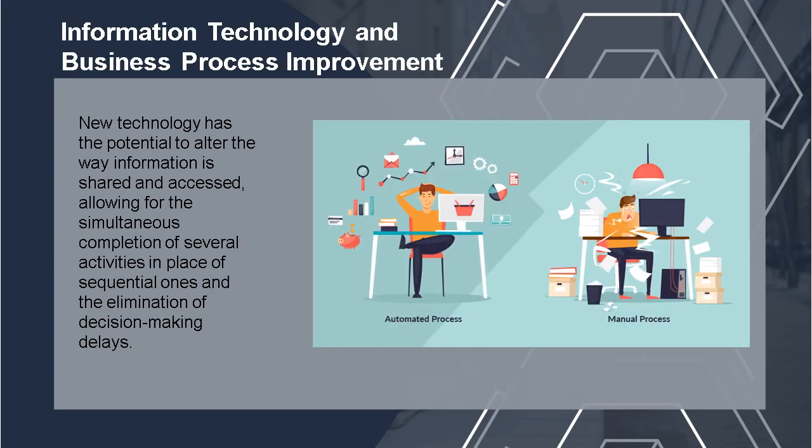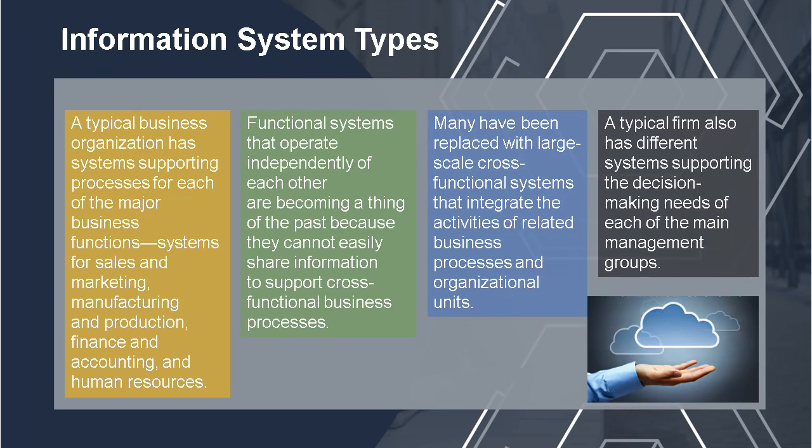Information Technology and Business Process Improvement. New technology has the potential to alter how information is shared and accessed, allowing for simultaneous completion of several activities in place of sequential ones and eliminating decision-making delays. Once we switch to automated processes, everything speeds up compared to manual processes. By performing a business process analysis, operations can be enhanced, making all company operations more productive and efficient.